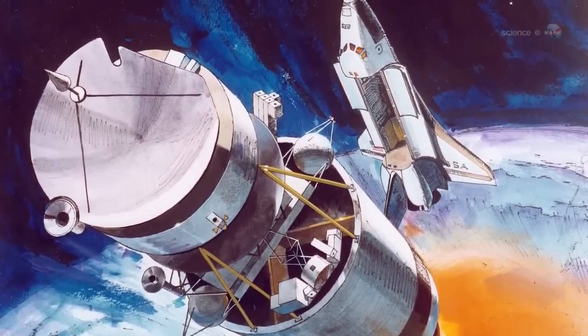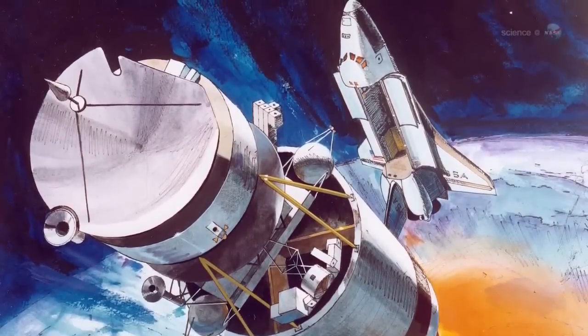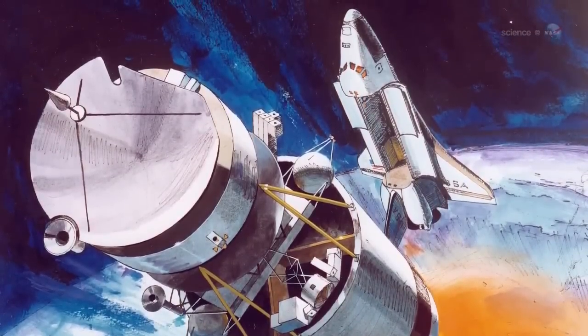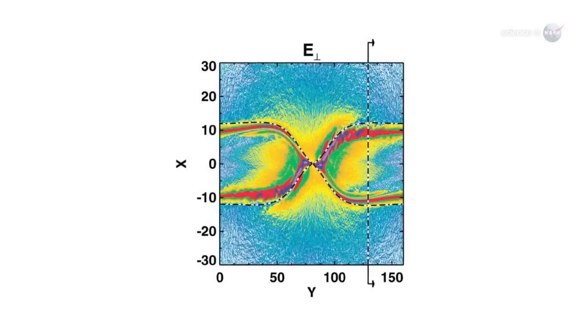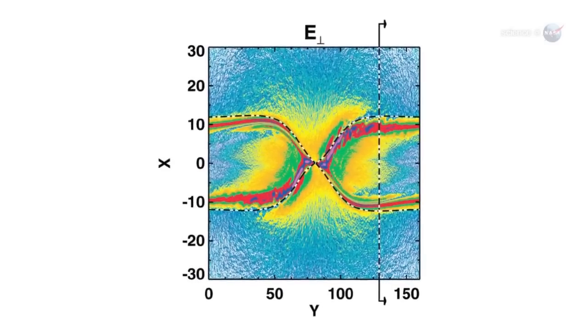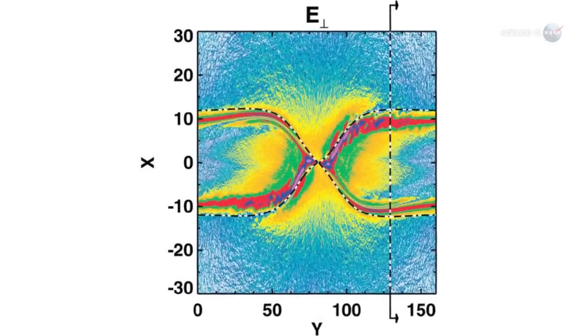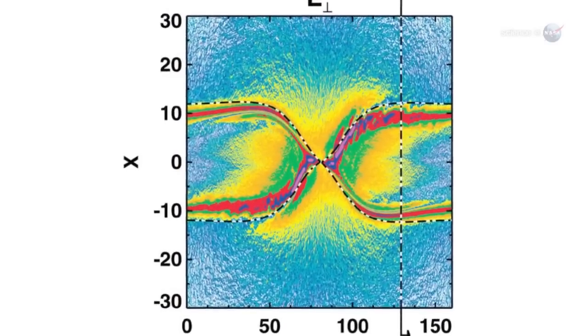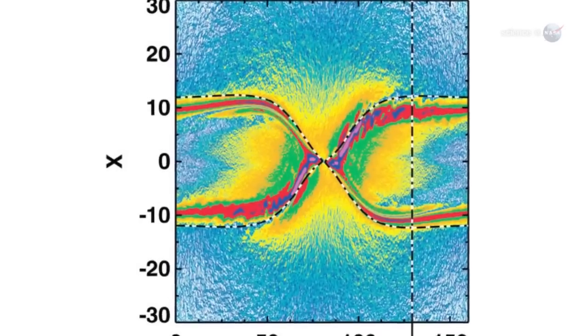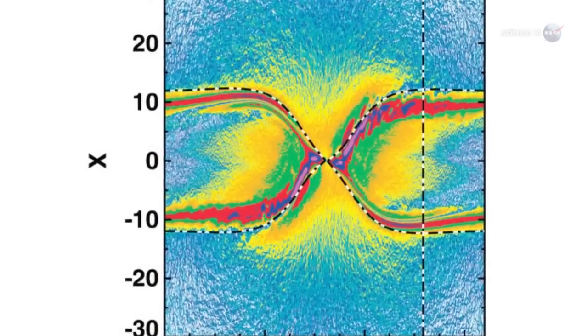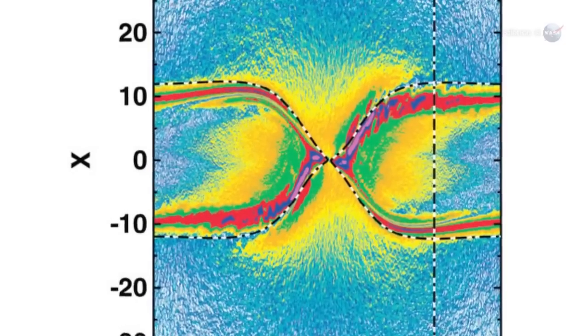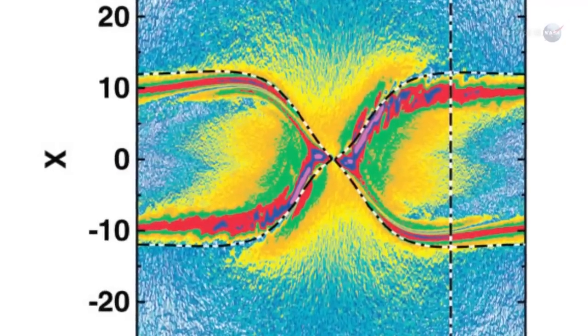Because Polar carried sensors similar to those of MMS, Scudder decided to see how an X-point looked to Polar. Using Polar data, we have found five simple combinations of magnetic field and energetic particle measurements that tell us when we've come across an X-point or an electron diffusion region. A single spacecraft, properly instrumented, can make these measurements.